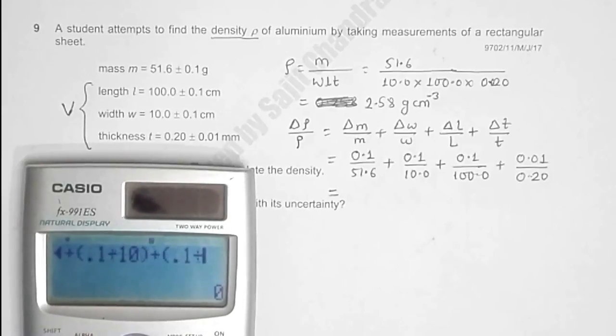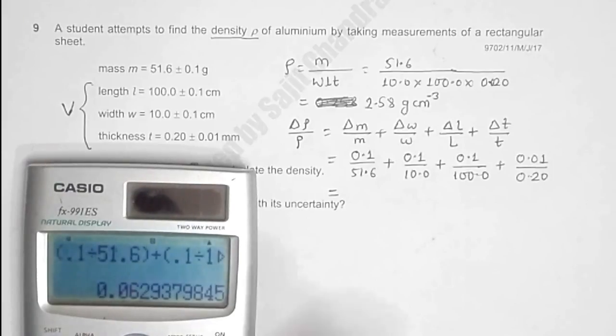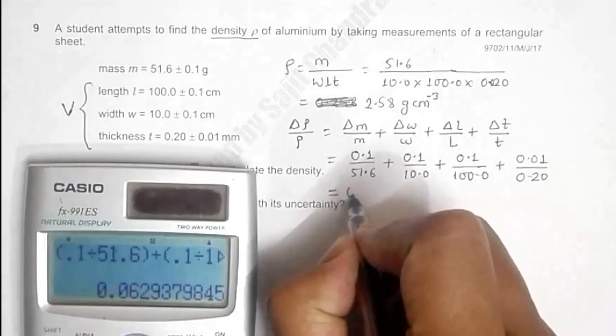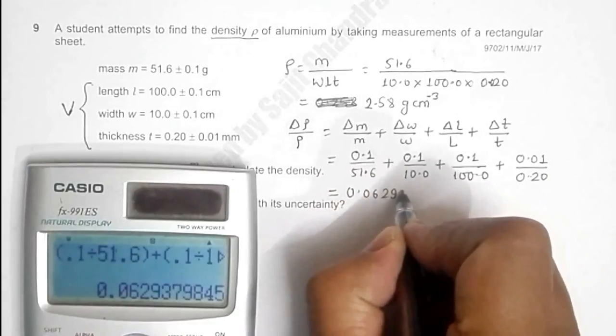100 plus 0.01 divided by 0.2, which equals 0.0629.